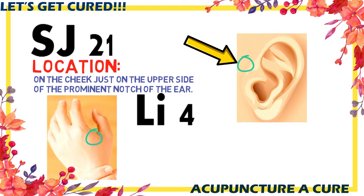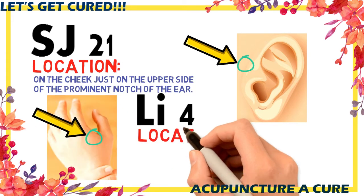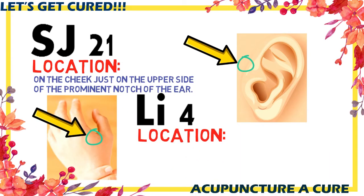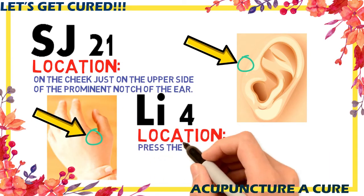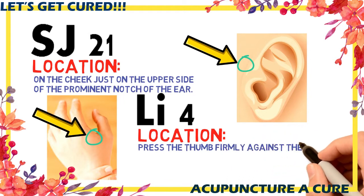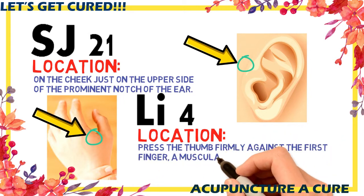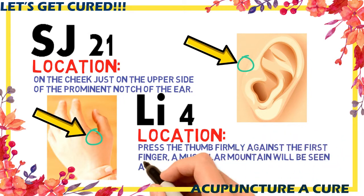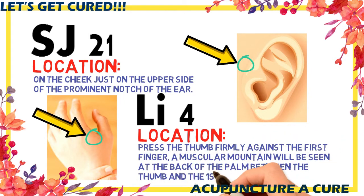The second last point in this video is Li-4. Press the thumb firmly against the index finger — you will see a muscular mound at the back side of the hand. The point Li-4 is located at the center of this muscular mound.